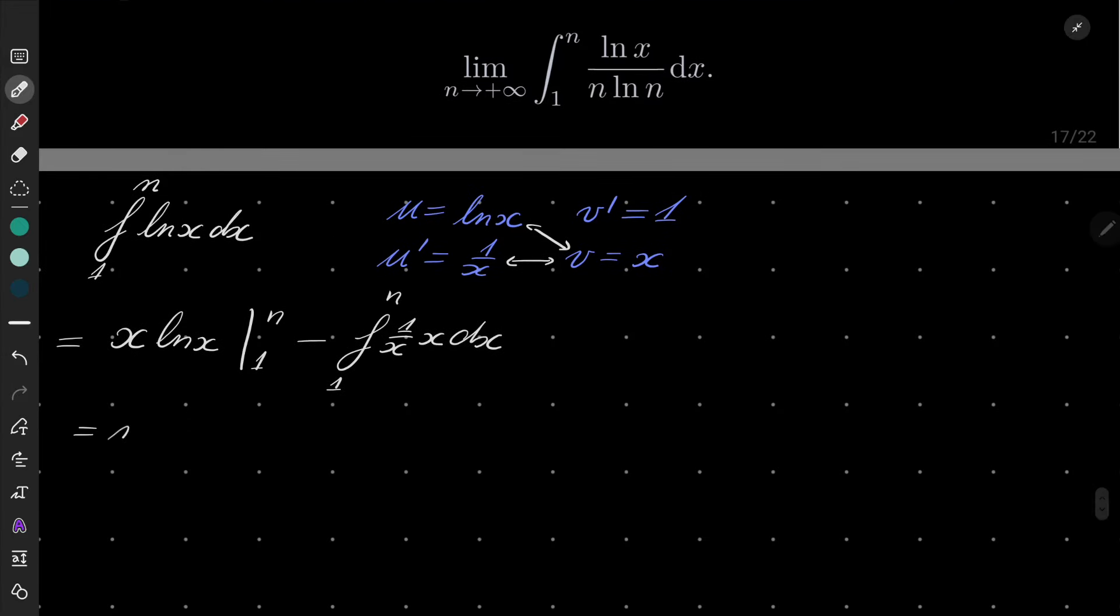The first part is just n natural log of n because if I plug x equals 1, natural log of 1 is 0 so it's gone. And the second part is just integral of 1.